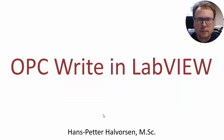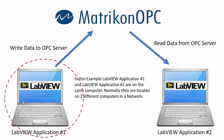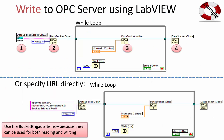So let's start with OPC write in LabVIEW — application number one, where we write values to the OPC server. Here are two examples of how to do that. We start using the data socket select URL, which opens a connection to the server, together with the data socket open. Then we use a while loop, and inside the while loop, write the values to the OPC server. When we are finished pushing the button, we close the connection using data socket close. In another example, we use the URL to the tag directly, using the bucket brigade tag, which is a good choice to use.